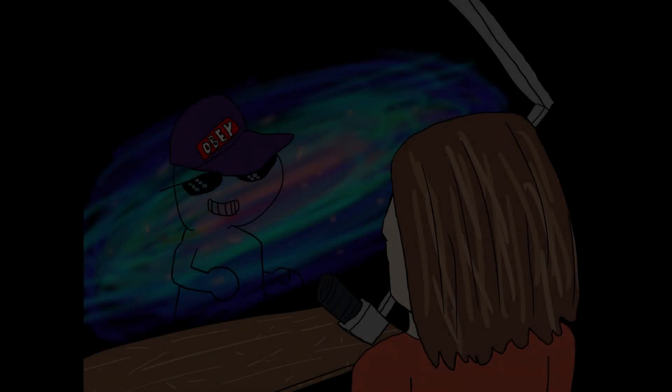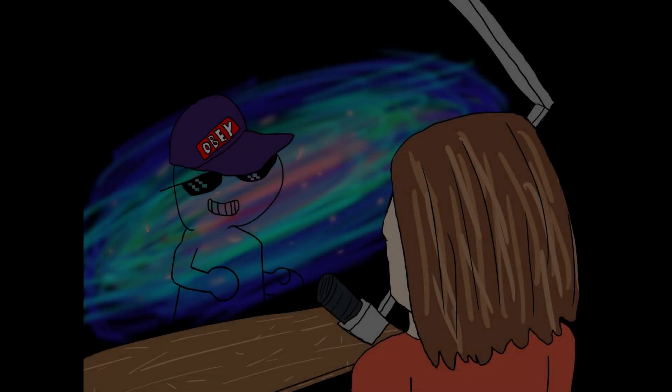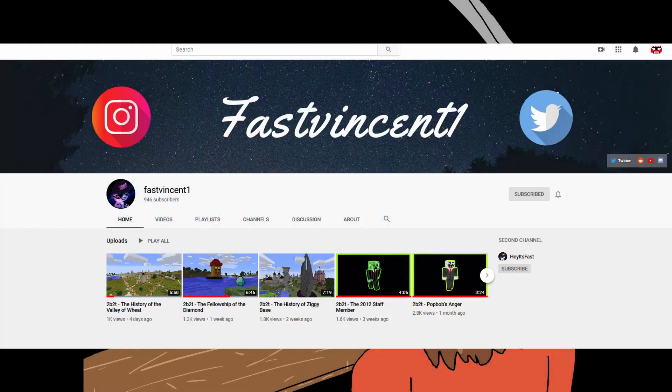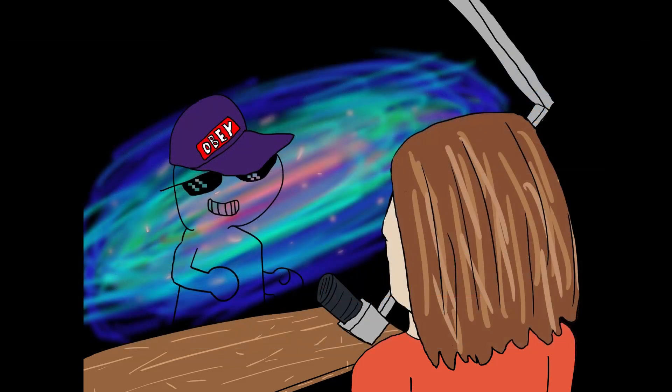Welcome everyone to the second installment of my 10 questions interview series. Today's interview is with FastVincent1, a small 2b2t YouTuber who started getting popular when he uploaded his first 2b2t YouTube video about a year ago. Correct me if I'm mistaken, I did some background checks on you. Yeah, definitely. I think it started about like 8 months ago, I think.